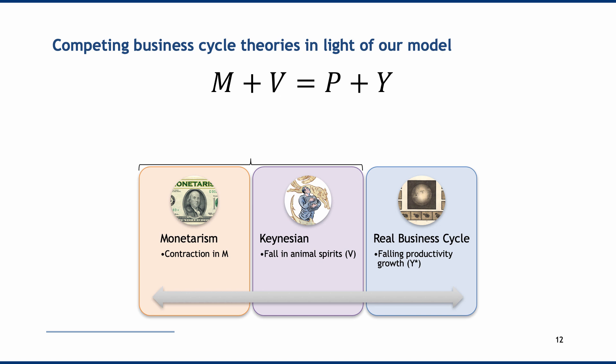Another valuable part of this model is that it clarifies differences between schools of thought. We can split modern macroeconomists into three main groups, each emphasizing a different element of the model. Monetarists blame inflation on excessive money creation, and blame depressions or downturns on insufficient money supply. The key policy indicator they look at is changes in the money supply — contractions in M explain why the right-hand side of the equation might be too low.